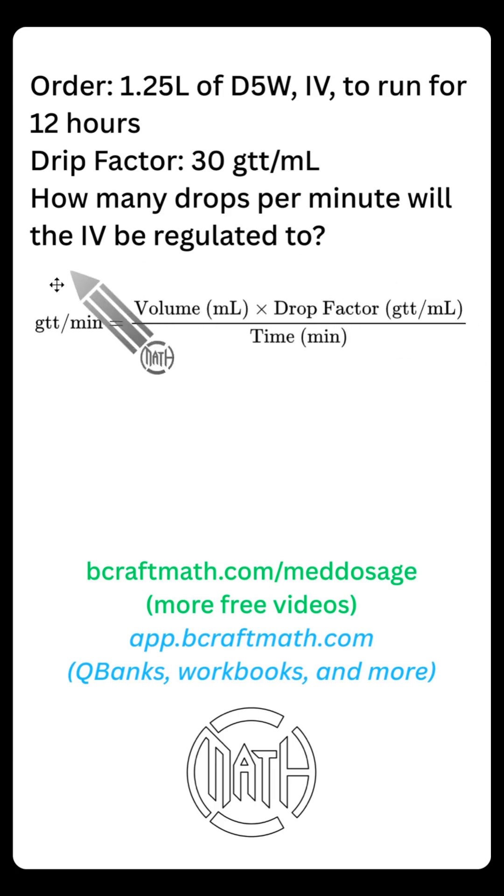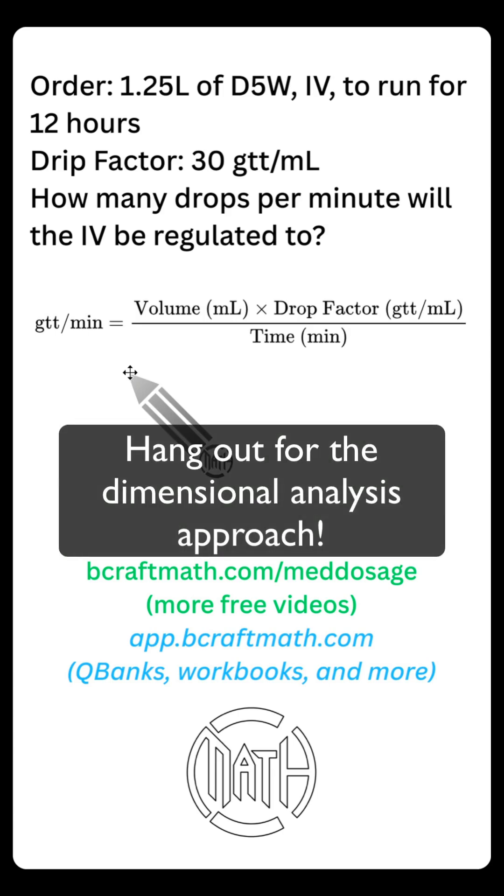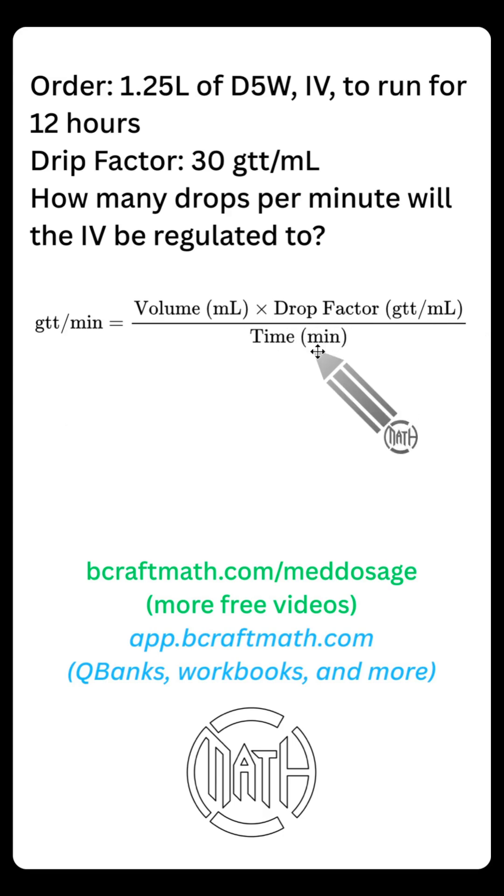We're going to first look at this formula approach. There are some disadvantages to it, but this example here is okay for using the formula. So to find drops per minute, we want to take the volume in milliliters, multiply it by the drop factor, which is drops per milliliter, and we want to divide all that by the time in minutes.